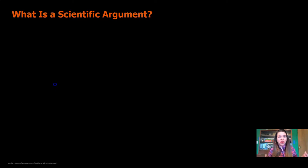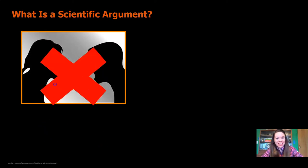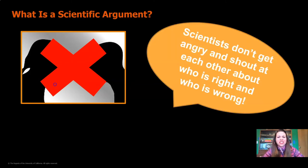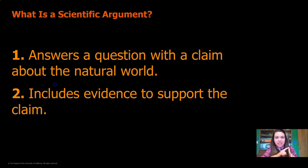Now we're going to work together to write our first scientific argument. What is a scientific argument anyway? When I visualize the word argument, I think of two people yelling at each other and being really mad — but that's not what a scientific argument is. Scientists don't get angry and shout at each other about who's right and who's wrong. Instead, a scientific argument does two things: number one, it answers a question with a claim about the natural world; and number two, it includes evidence to support the claim. We've selected our claim — Blue Island is the best island for the orangutan reserve — and we have evidence to support it. So we're ready to make our scientific argument.